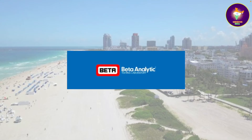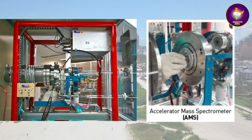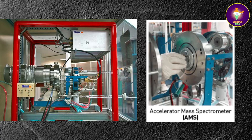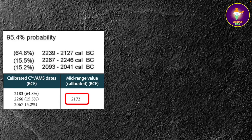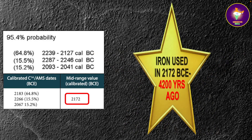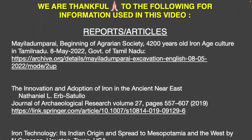The iron objects were sent to the reputed Beta Analytic Laboratories in Miami, Florida, USA for radiocarbon dating using AMS — the most reliable method of dating. The mid-range calibrated dating for the iron samples was found to be 2172 BCE. This means iron was first introduced and used in India — in Tamil Nadu, by the Tamils — in the year 2172 BCE or before, i.e. over 4200 years ago. In other words, the Iron Age started as early as 4200 years ago in Tamil Nadu, India.